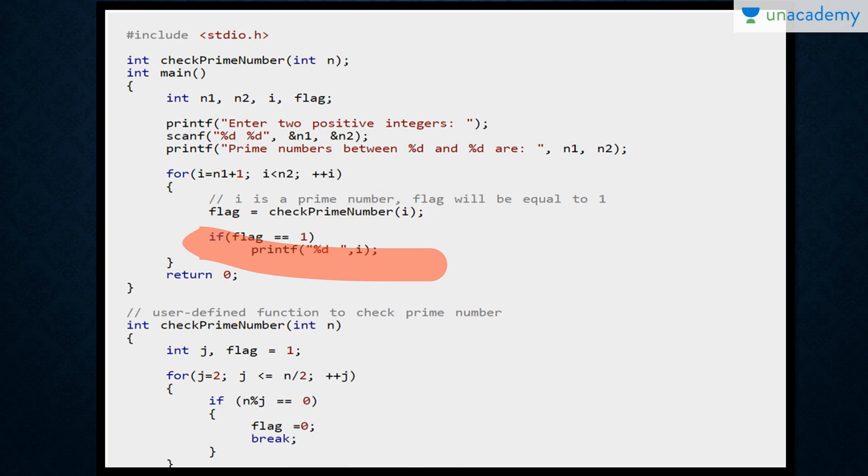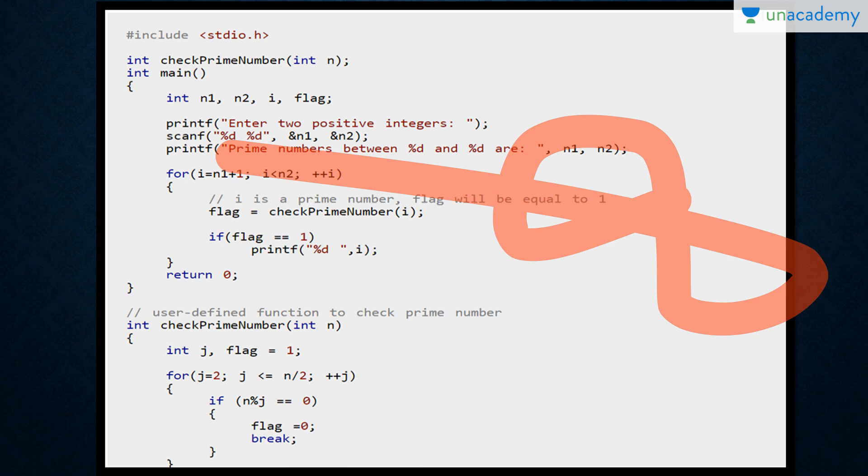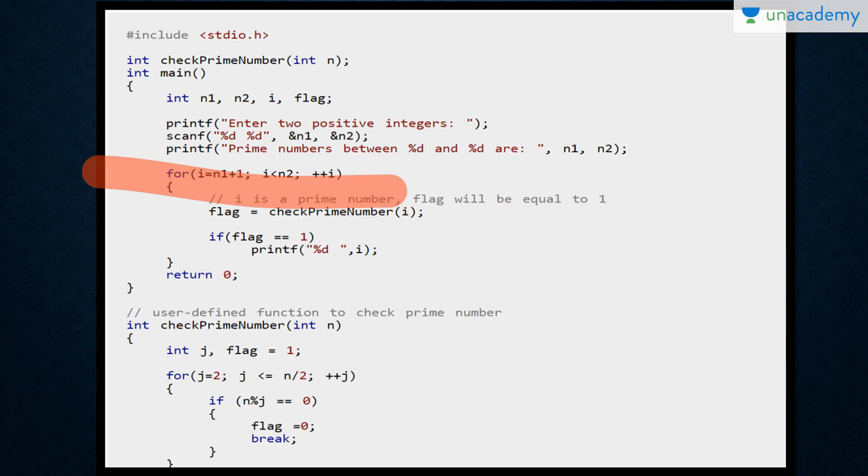In the check prime function, if flag is 1, then j runs from 2 to n by 2. If n mod j equals 0, flag becomes 0 and we break. If flag is 0, it is not a prime number. But if flag is 1, then it is a prime number. Let's see once again. We enter positive integers, then run a loop between each number and check using check prime number.